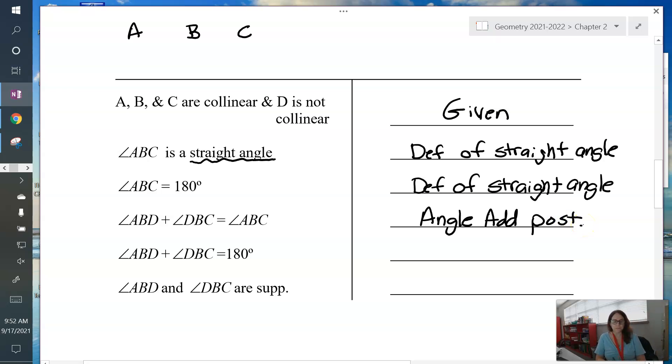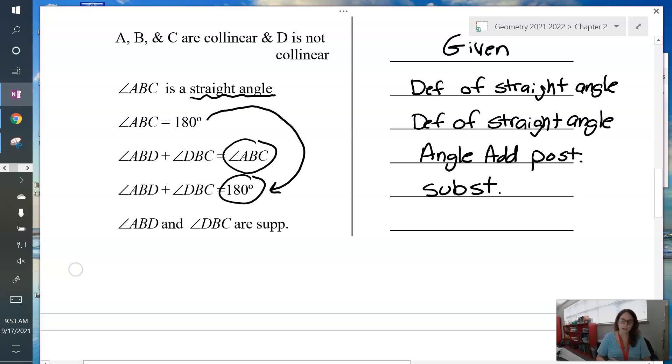Now I have this equation, and then in place of ABC, 180 degrees shows up. So this has been substituted into there, so this is just substitution. Last thing is my equations are gone and it just says angle ABD and DBC are supplementary. Well, that's the definition of supplementary. Isn't that when you add two angles together, they equal 180? So definition of supplementary.